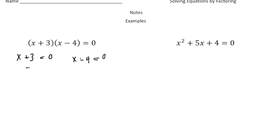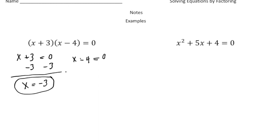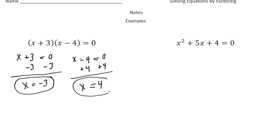I'm going to take away 3 from both sides, so this is going to give us a solution of x equals negative 3. That's one solution. And here I'm going to add 4 to both sides, and the other solution is going to be x equals positive 4.